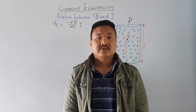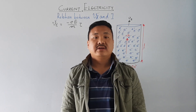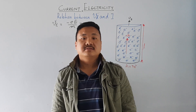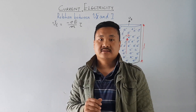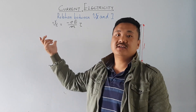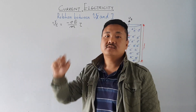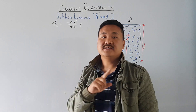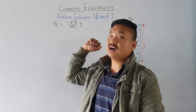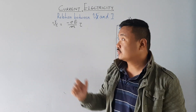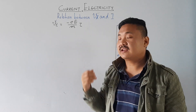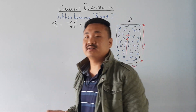In the last lecture, we derived the relation for drift velocity in the conductor. The drift velocity is Vd equal to minus eE divided by m into tau. All the variables were described and explained in the last lecture.